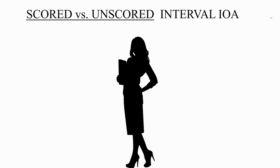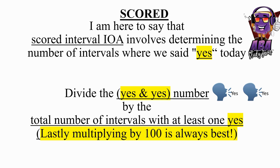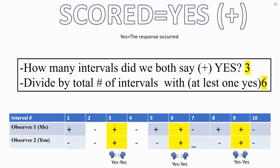Scored interval IOA involves determining the number of intervals where both observers said yes. Divide the yes-and-yes count by the total number of intervals with at least one yes, then multiply by 100. For example: how many intervals did we both say yes? Three. Divide by total number of intervals with at least one yes — six. Multiply by 100. The IOA is 50%.